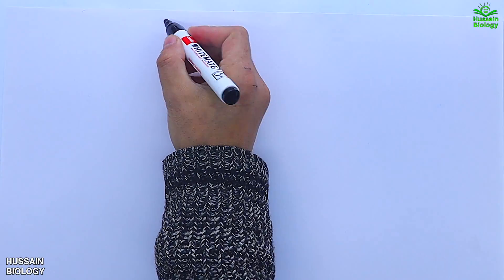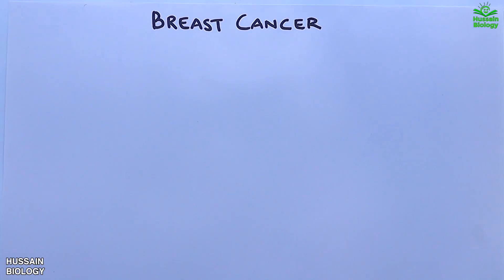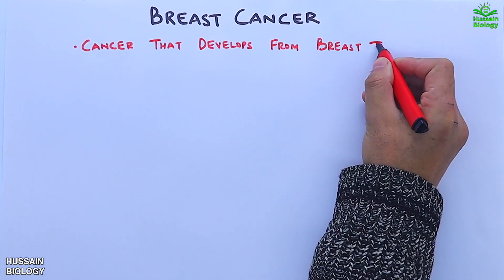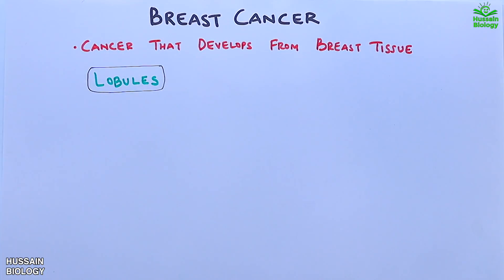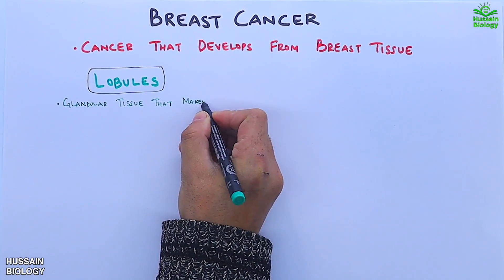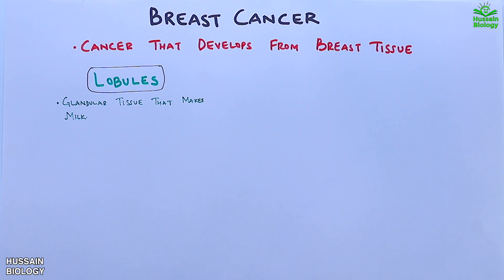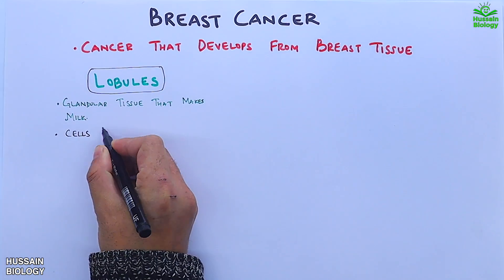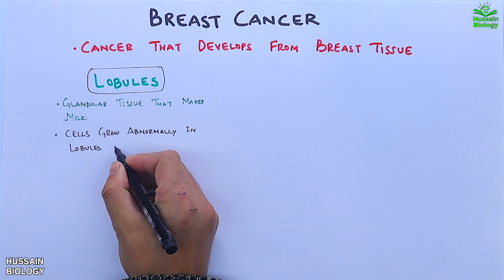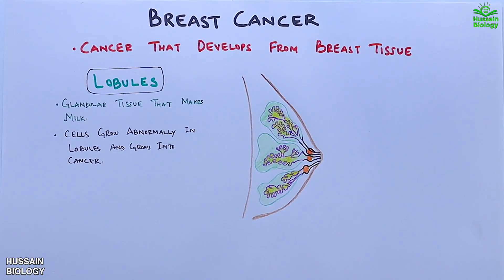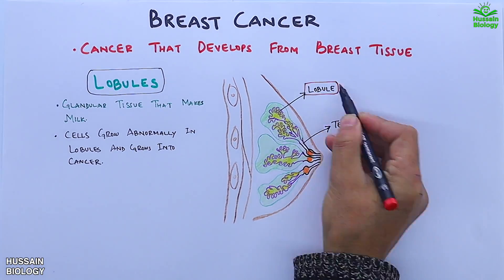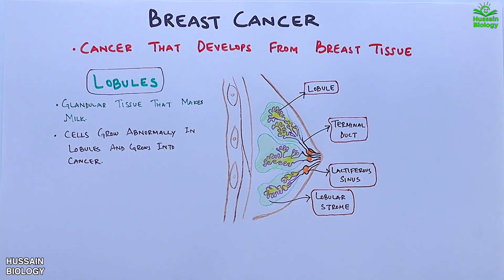In this video we'll be discussing breast cancer, which is the cancer that develops from the breast tissue. If we look at some internal structure parts of the breast, first we have the lobules — these are the glandular tissue that produces milk. In case of breast cancer, cells grow abnormally in lobules and grow into cancer. In this diagram we can see the structures in the breast showing lobules, terminal duct, lobular stroma, lactiferous sinus, and main duct.